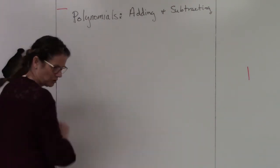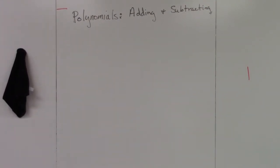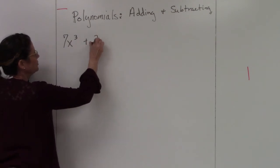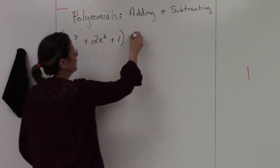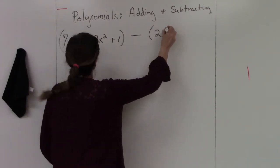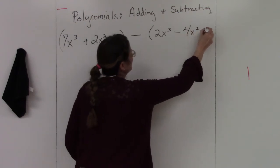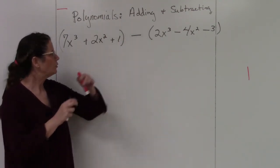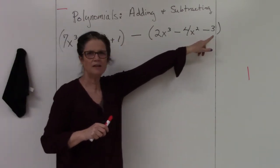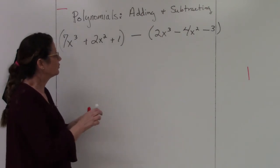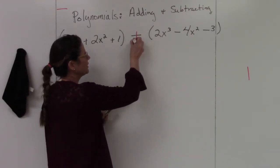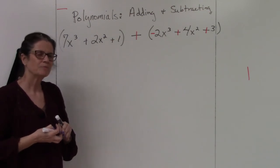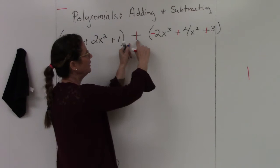Subtracting is a bit more of a process because you're subtracting the whole polynomial. For example: (7x³ + 2x² + 1) − (2x³ − 4x² − 3). When there's a subtraction sign in between, you're doing the opposite of everything in the parentheses after it. So you change it to a plus sign and then change every sign inside the second set of parentheses. Now you're back to adding polynomials.